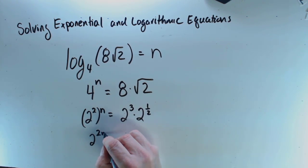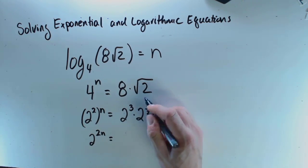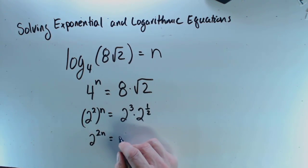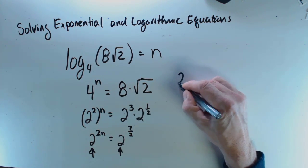Okay, so in other words, 2 to the 2n is equal to 2 to the exponent 7 over 2. And so since the bases are the same, that means the exponents have to be equal.